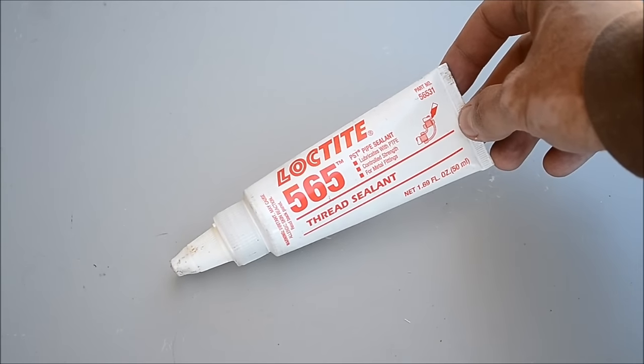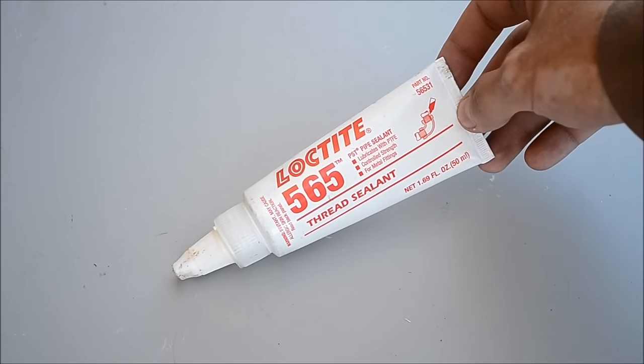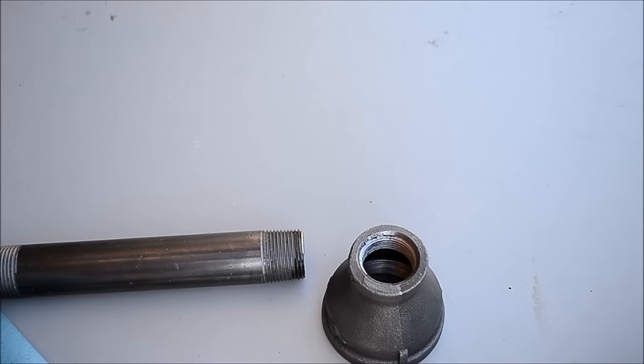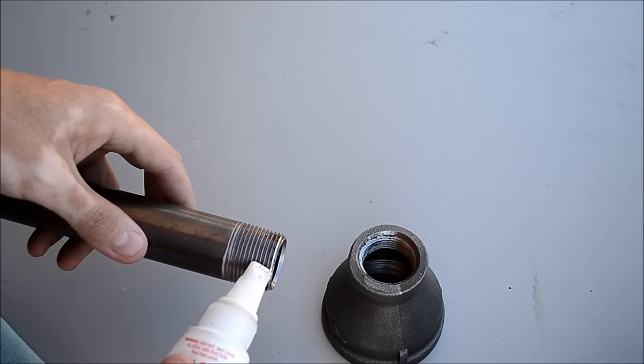To seal all the joints, we're going to use Loctite 565. It's a thread sealant that's better than Teflon tape for holding up to propane.